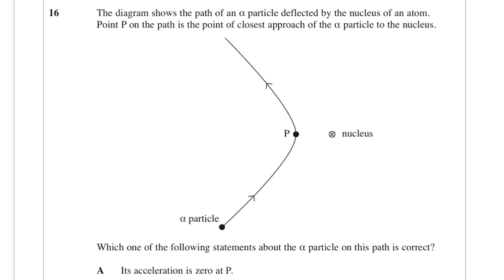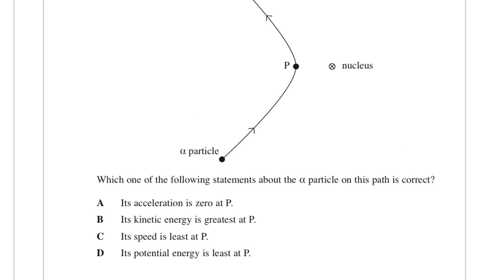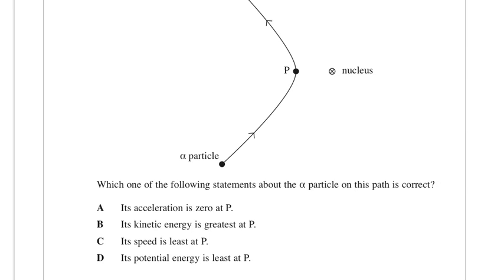The diagram shows the path of an alpha particle deflected by the nucleus of an atom. Point P on the path is the point of closest approach. Which statement is correct? Its acceleration is 0 at P - no it's not, it's the point of maximum acceleration. The kinetic energy is greatest at P - rubbish, it will be the smallest at P. Its speed is smallest at P - yes that's true, it has reduced the speed at least.